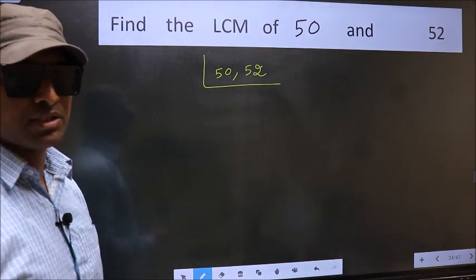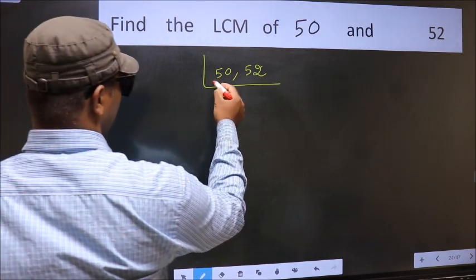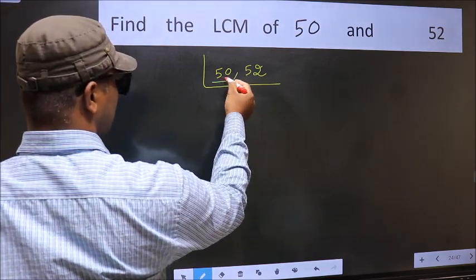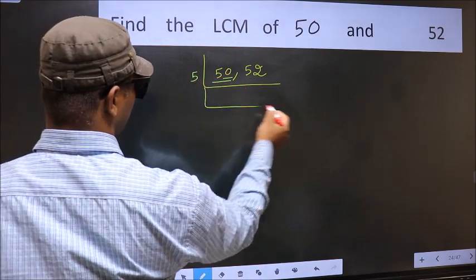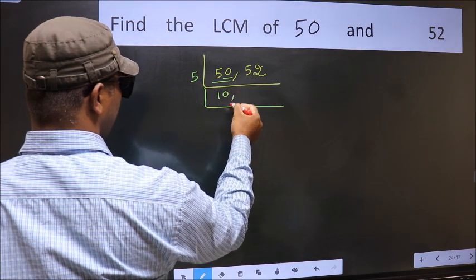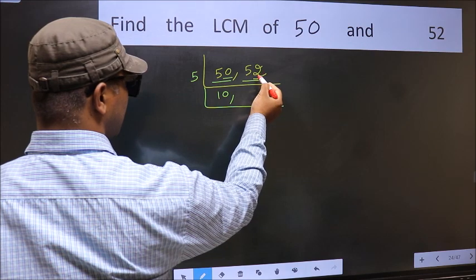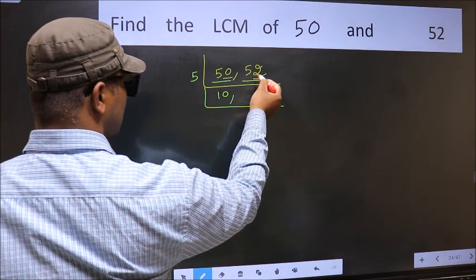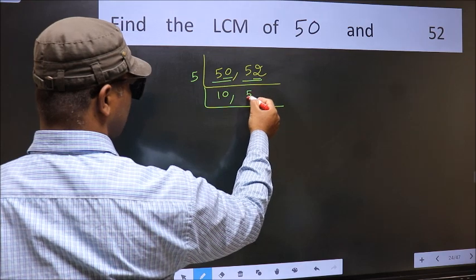Now you should focus on the first number, which is 50 here. For this number, last digit is 0, so directly take 5. When do we get 50 in the 5 table? 5 times 10 is 50. Now the other number, 52. Last digit is neither 0 nor 5, so this is not divisible by 5. So we write it down as it is.